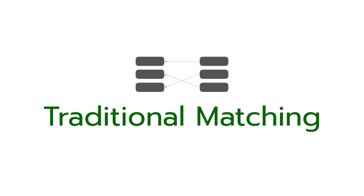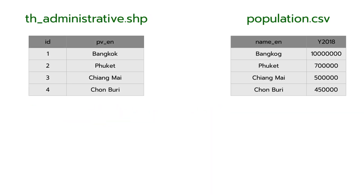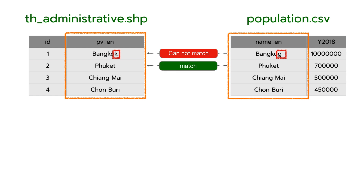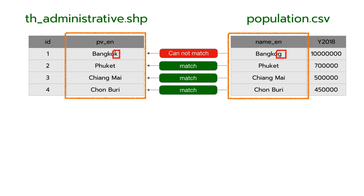Let's talk about traditional matching. I would like to join the table on the left side and the table on the right side. When I use traditional matching, some rows cannot match because the value in both fields is not exactly the same, like row number 1. When you join an attribute table, the result will look like this.